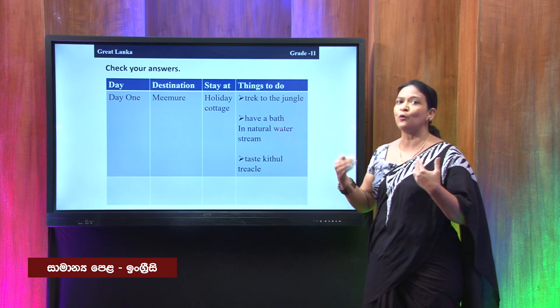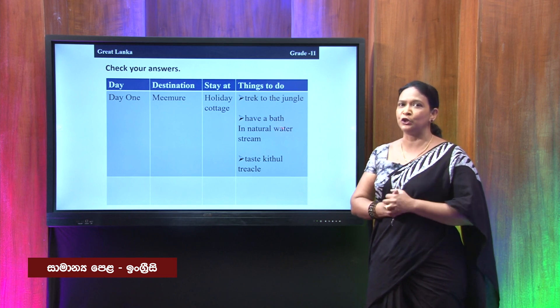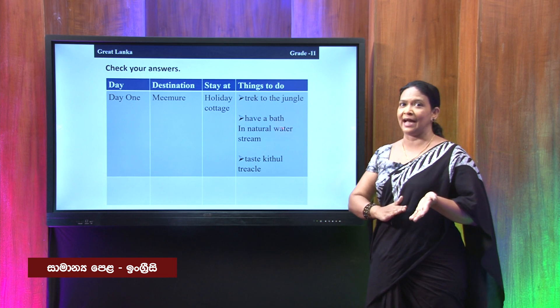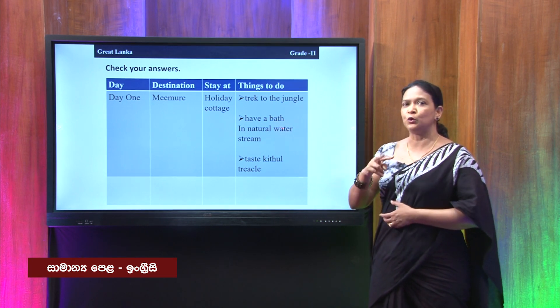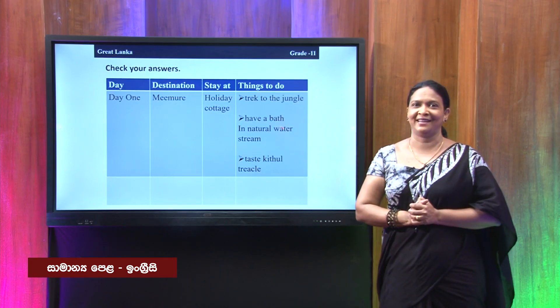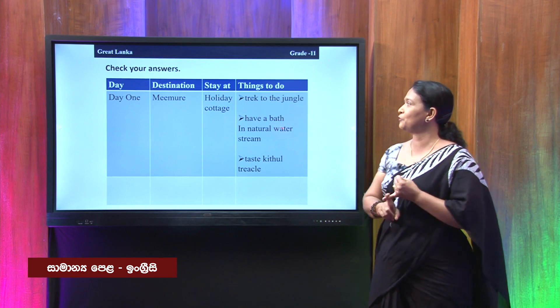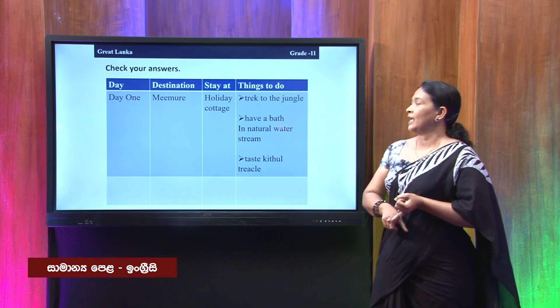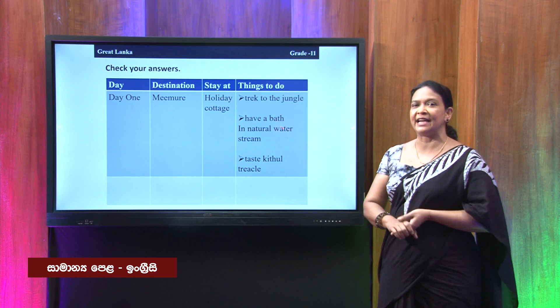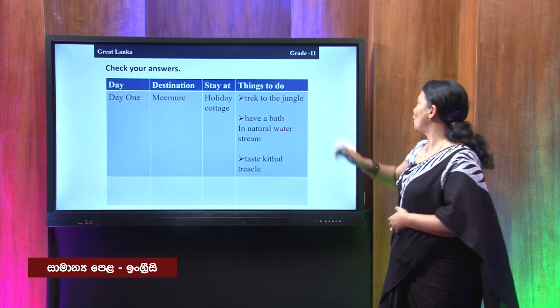This is not over yet — we have to move on to the second part. I am going to give you the complete dialogue again. To make it easier, I have used two colours: black shows the part of the dialogue you read earlier, and blue shows the new part you need to read to find information for the next part of the itinerary. You are going to read the complete dialogue again and find out the same information: the day, the destination, where he is going to stay, and the things he is planning to do.